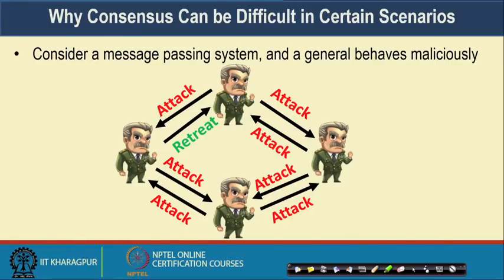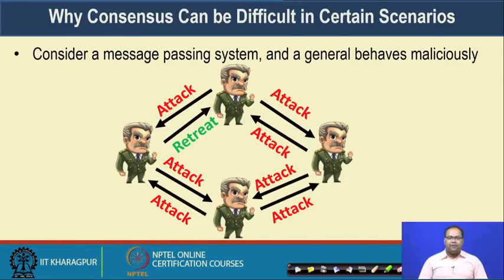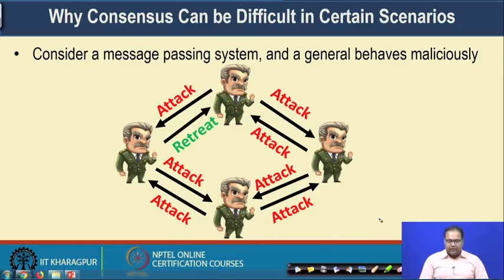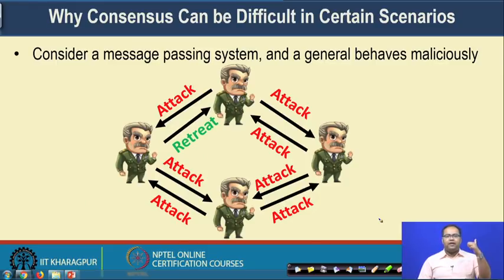Let us look into why achieving consensus can be difficult in a certain scenario — typically in a message passing system. We are considering again the example of multiple generals. These generals are utilizing a message passing environment to communicate their viewpoint to others. You can think of every individual general making a telephone call to the other generals and communicating their viewpoint to others.